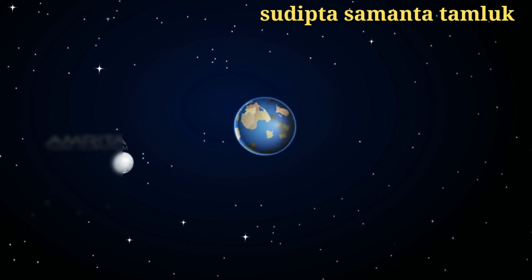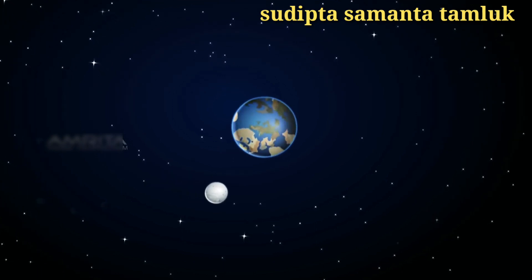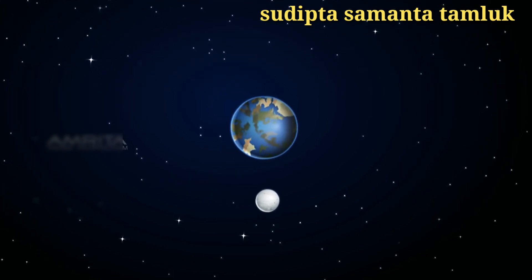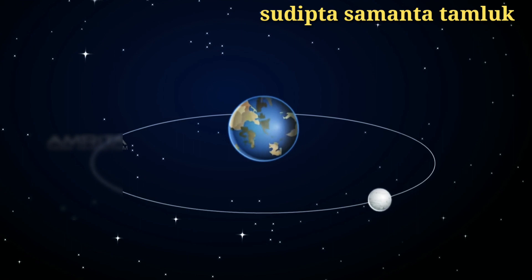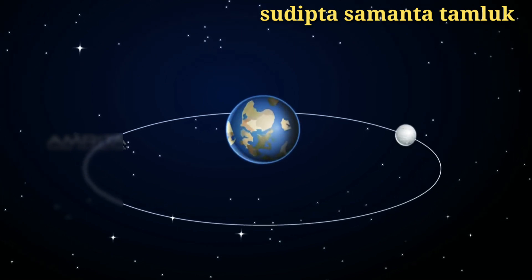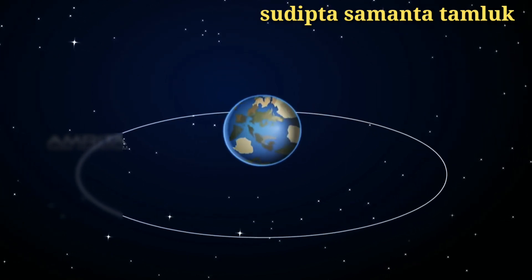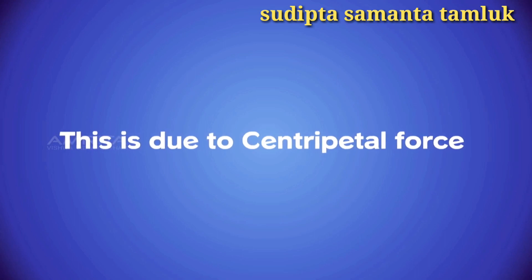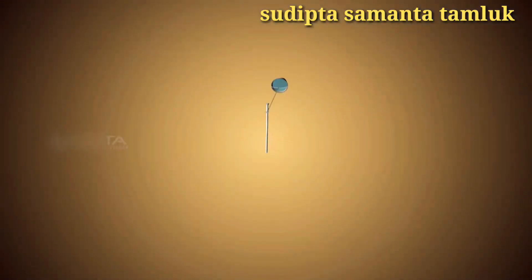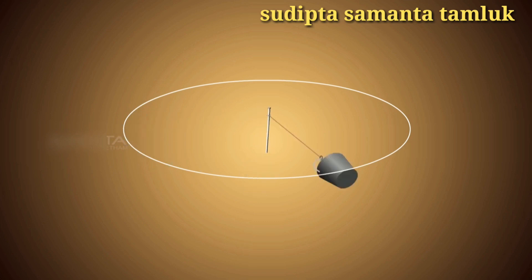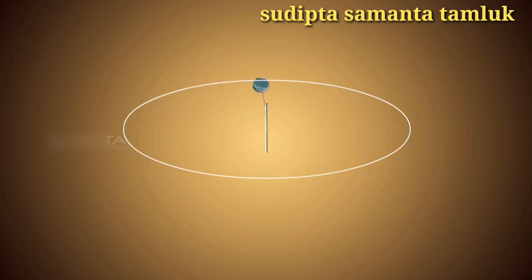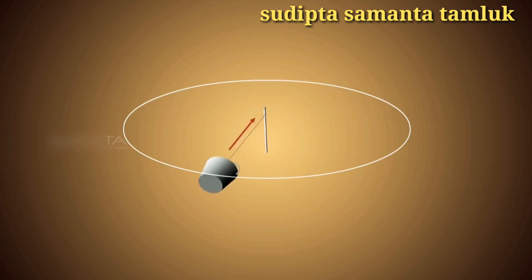If so, why does the moon revolve around the earth? Newton argued that at each point of its orbit, the moon falls towards the earth instead of going off in a straight line. This is due to centripetal force. A continuously moving body in a circular path will change its velocity to accelerate itself. The force that causes this acceleration and keeps the body moving along the circular path towards the centre is called centripetal force.